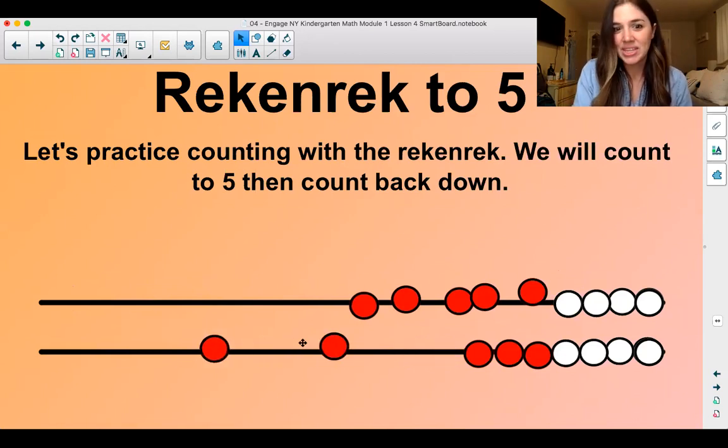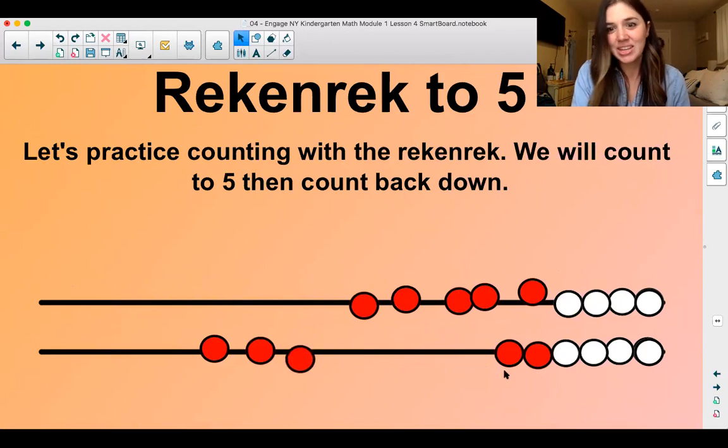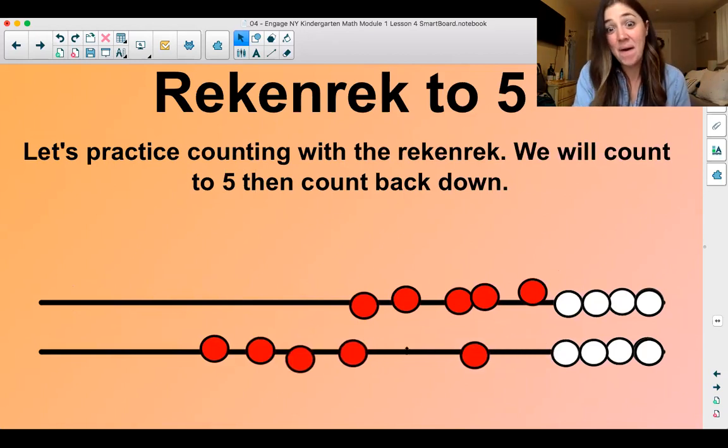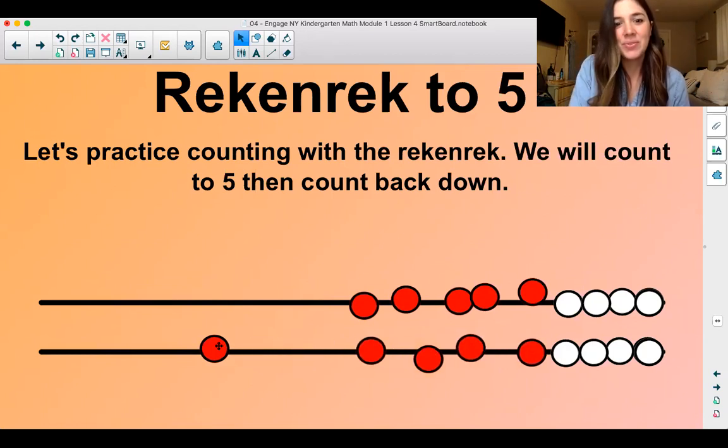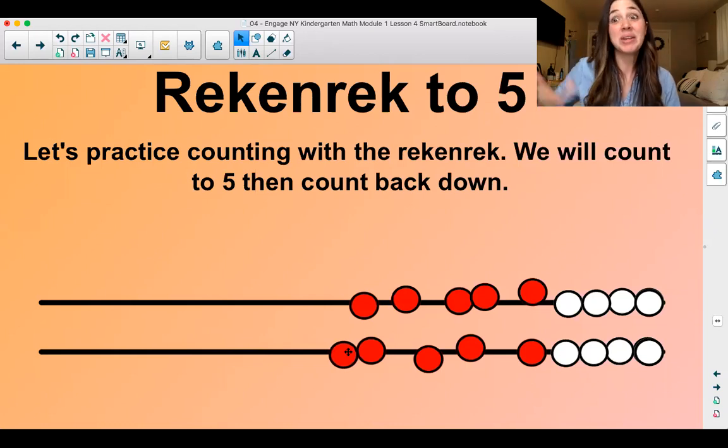Ready? One. Two. Three. Four. Five. Down. Five. Four. Three. Two. One. Good. In a few lessons, we'll start counting up and down with sunrise and sunset counting, which is my favorite way to do this.